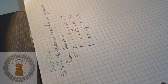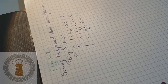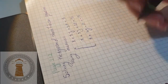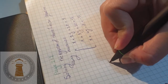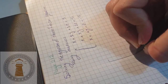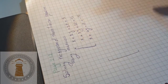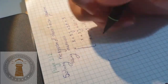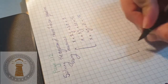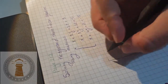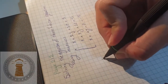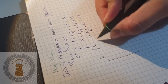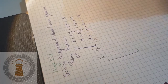Before we perform our row operations, we're going to rearrange these into the matrix. The matrix is always represented by a very big square bracket like this. We're going to set up each column — one for x, one for y, and one for z.